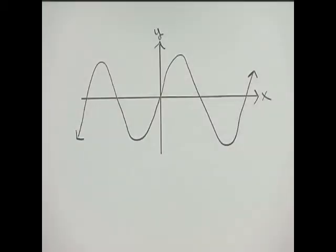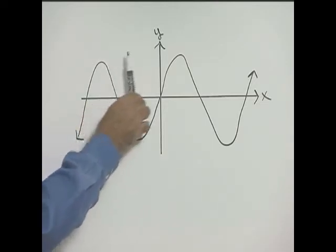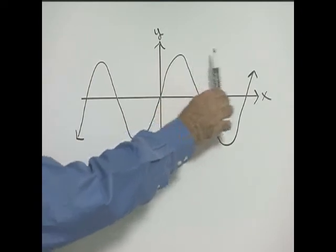Let's look at the relation graphed. Is this relation a function and why? Well, we need to do our vertical line test. What the vertical line test says: if our graph touches in only one point...